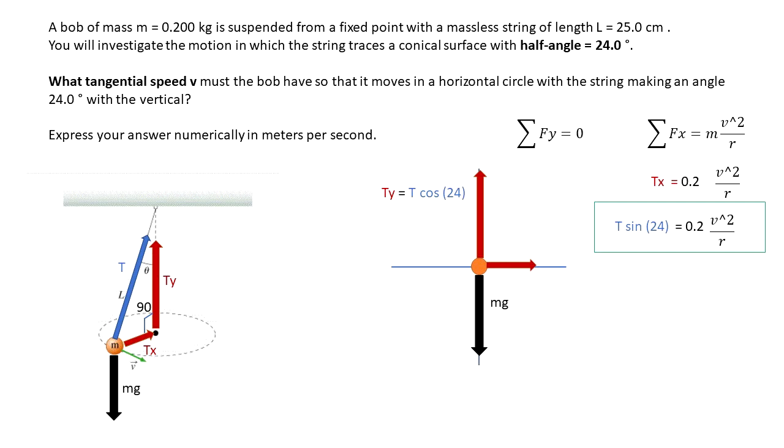I'm going to change Tx by the T, that's the magnitude of the tension, times sine of 24, that's equal to 0.2 times v squared over r. I placed this equation in a green square, because we need to go back and forth to this same equation, so that's important to keep this equation in mind.